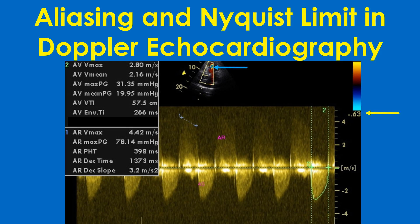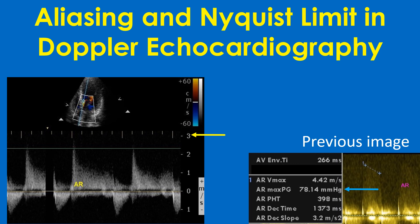The color bar is not just red and blue, but a continuum of colors for varying velocities. Aliasing may not be displayed if the jet is not seen fully, as in the case of trivial aortic regurgitation, where the velocity limit above the baseline is about 3 m per second, corresponding to a gradient of 36 mmHg. In the previous image, the AR jet velocity was 4.42 m per second, corresponding to a gradient of 78.14 mmHg. Aliasing velocity and Nyquist limit are much lower in pulsed Doppler, which is why only HPRF is used for high velocity jets.